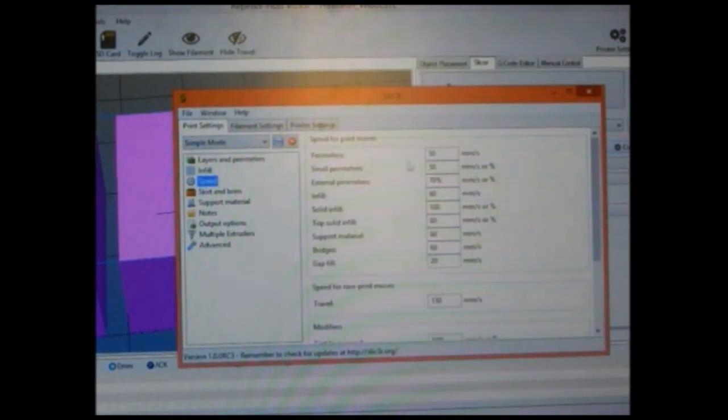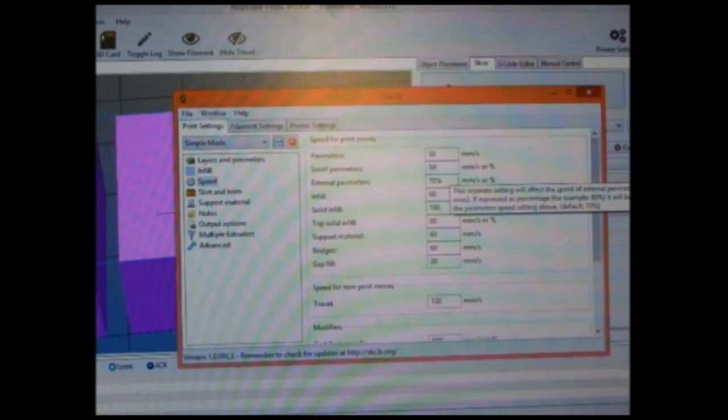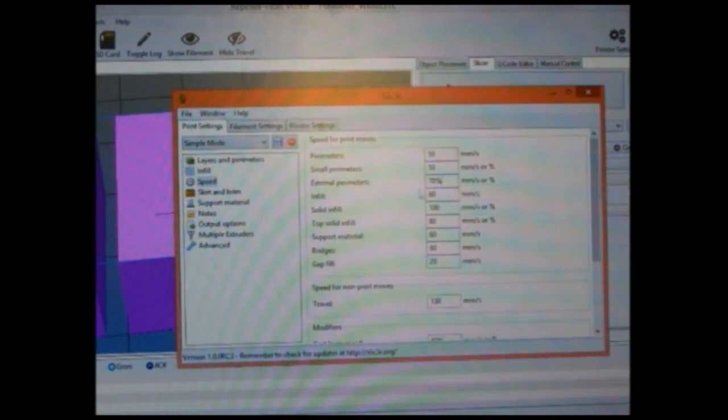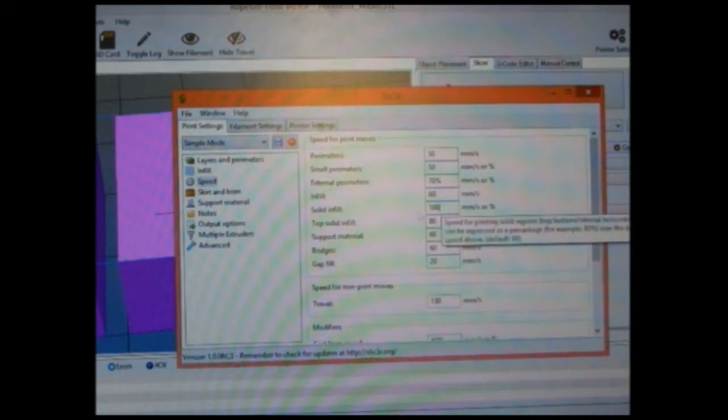In speed, change it to 50, small perimeters 50mm per second, external perimeters at 70%, infill at 60mm per second, solid infill at 100mm per second.